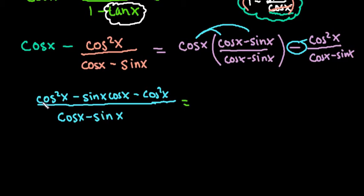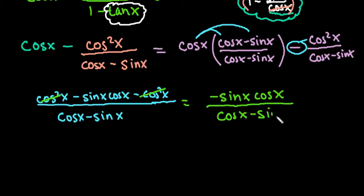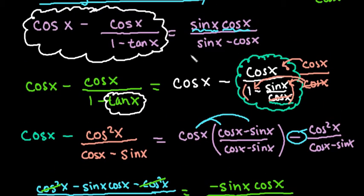So now if I simplify the numerator, cosine x squared minus cosine x squared cancels out. So I'm left with negative sine x cosine x over cosine x minus sine x. So if I look at my original problem, we're getting very close to having this.